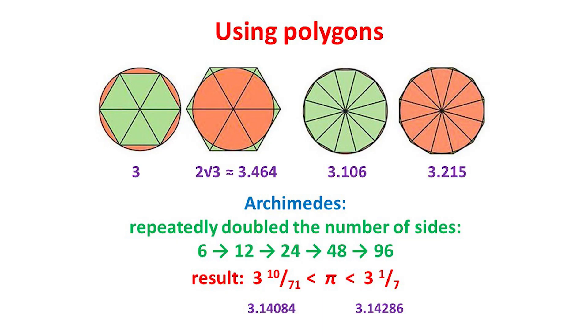This method was used in particular by Archimedes, who started with a regular hexagon, obtaining a lower estimate for pi of 3, and an upper estimate of 2 times the square root of 3, which is about 3.464.